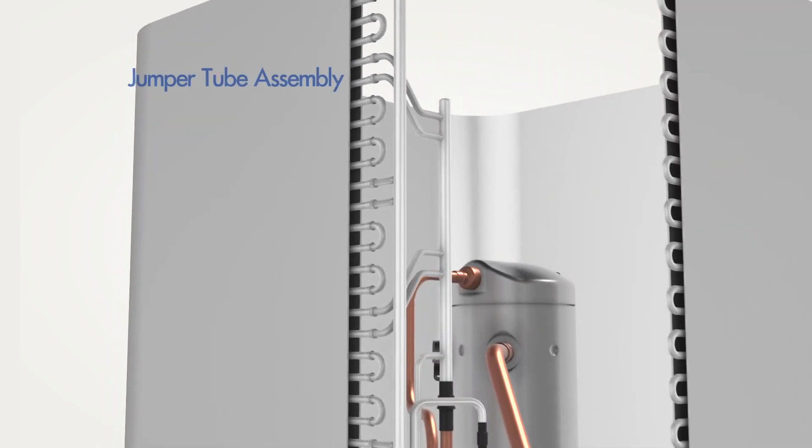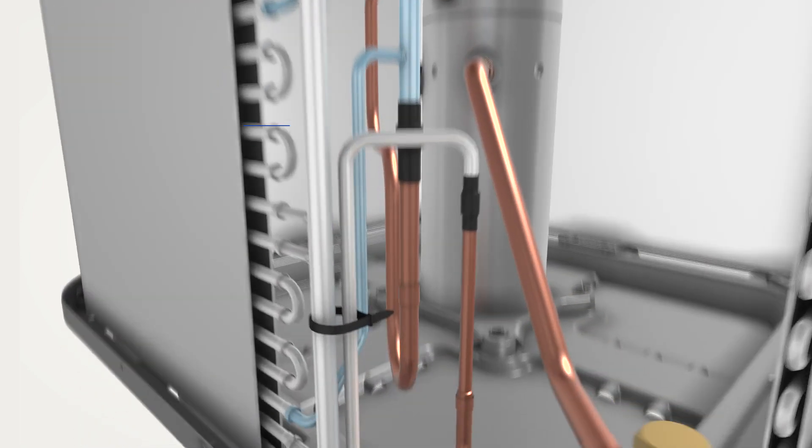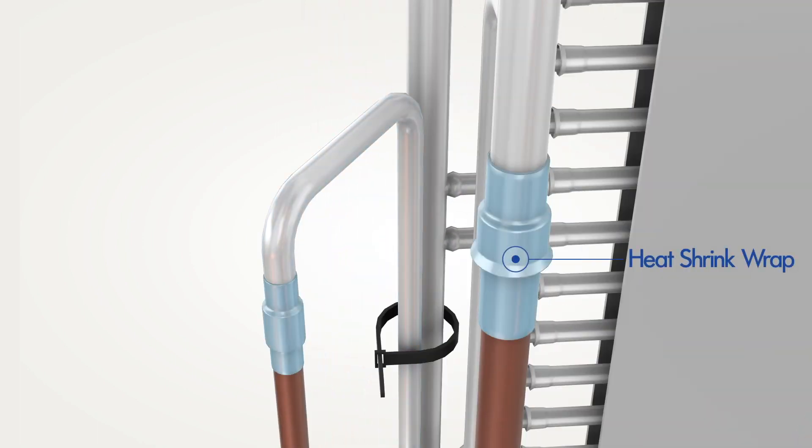Other key aluminum components are sprayed with a zinc coating as well. Any copper to aluminum joints remaining on the unit are protected with a special heat shrink wrap.